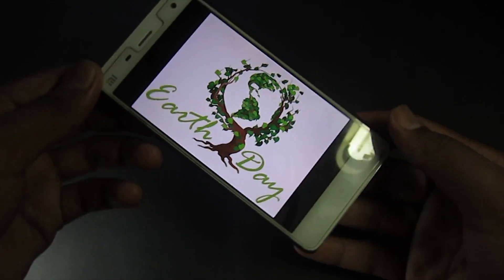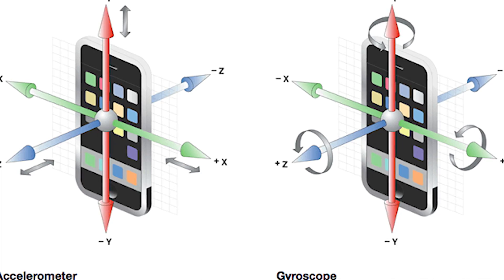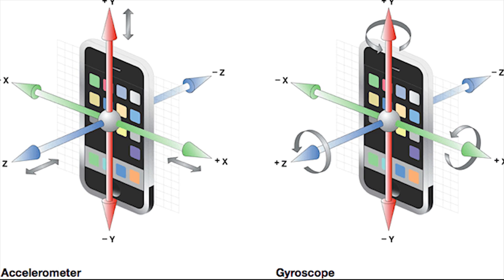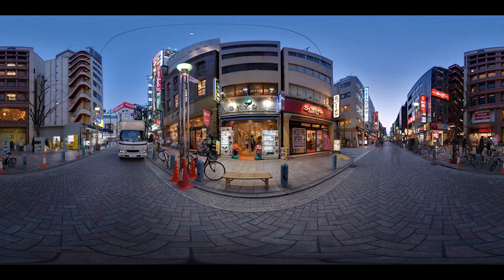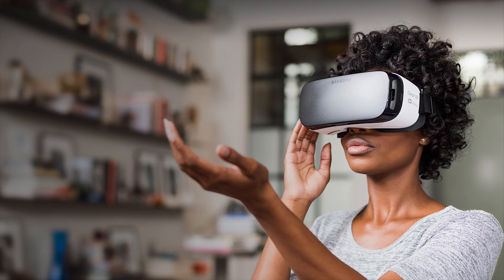Next is the gyroscope. This sensor provides orientation information with greater precision. This also helps in watching 360 videos and this is the main component for virtual reality.